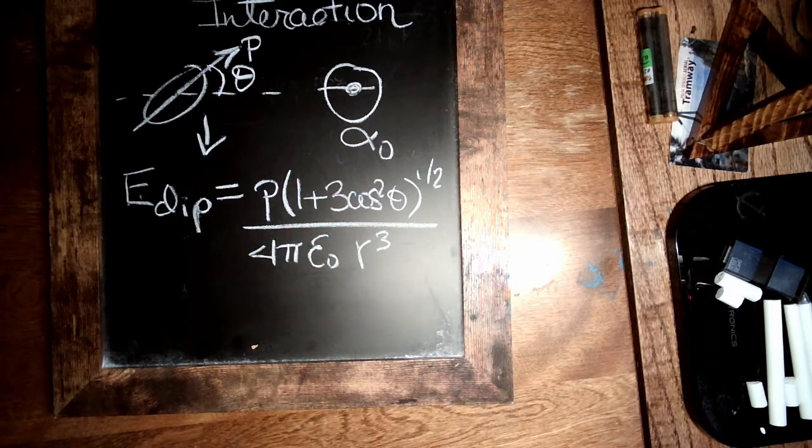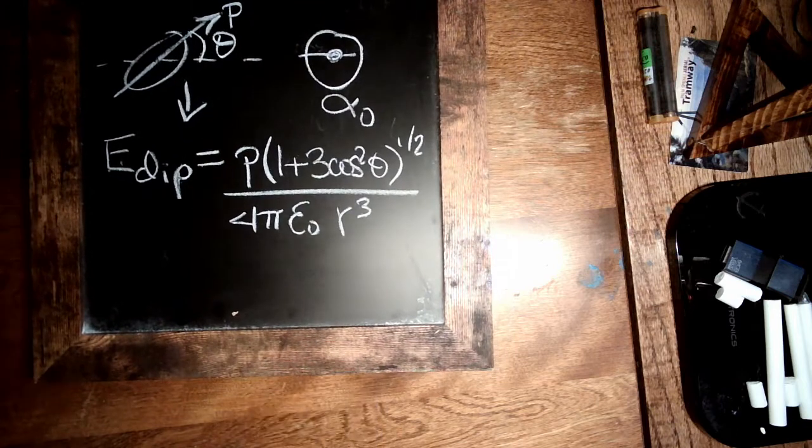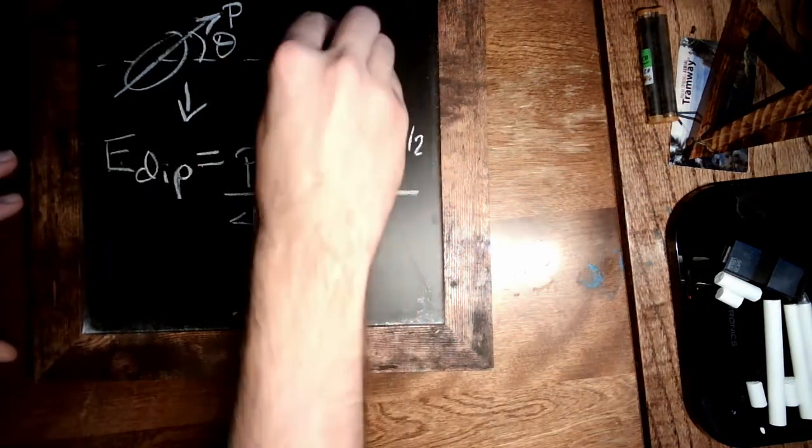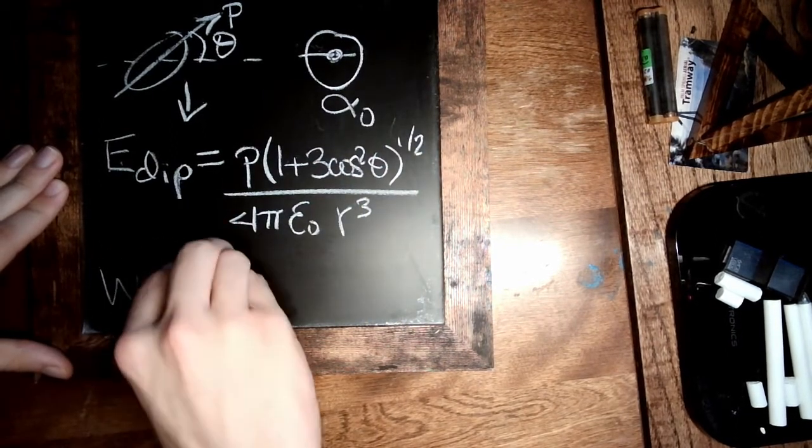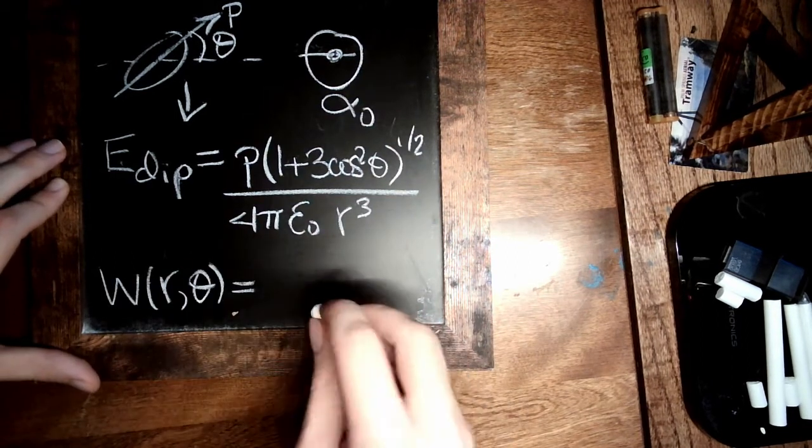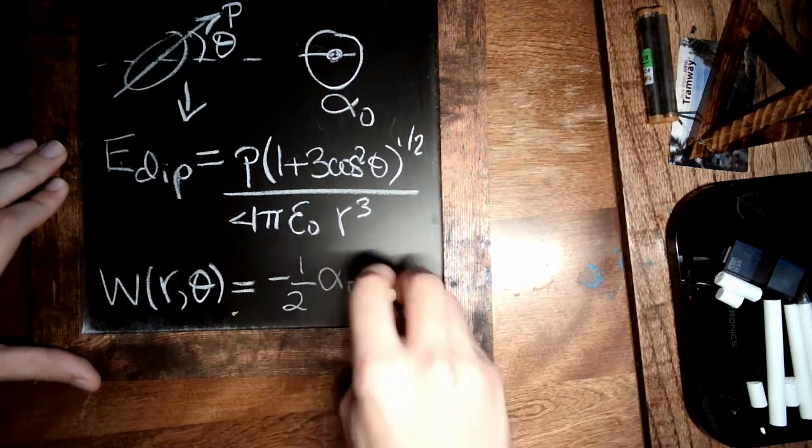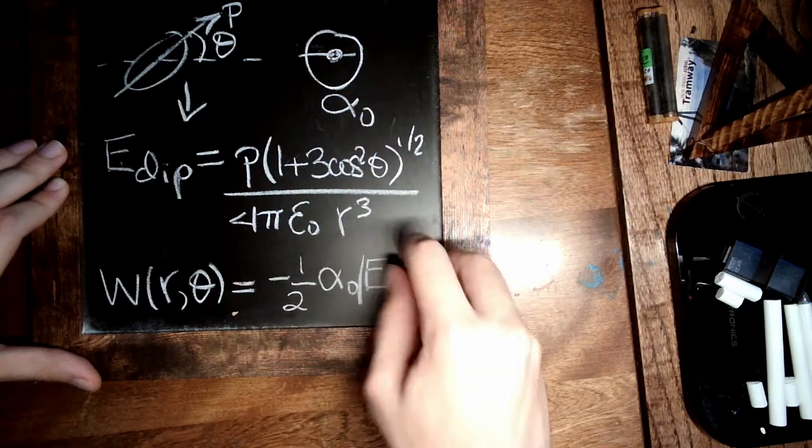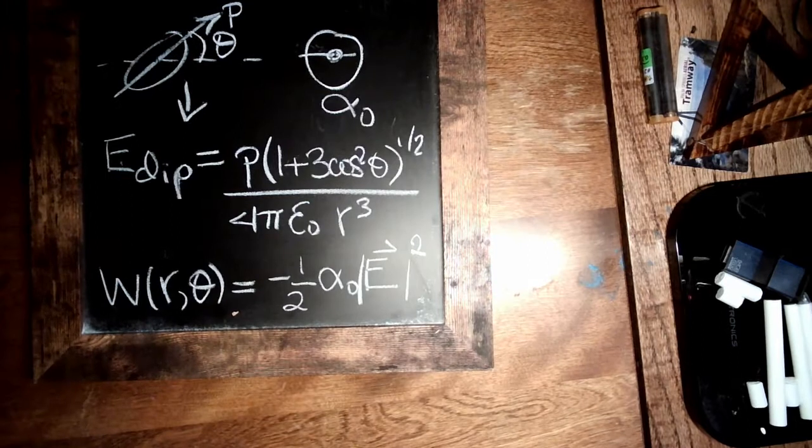And an important result from before was that the total energy, the interaction energy from a dipole on a polarizable object, which in our recent language is W(r, theta), is just simply minus one half alpha zero times the magnitude of the electric field squared. That's all we need to do.